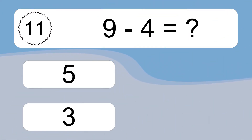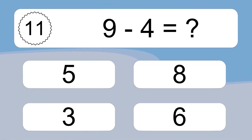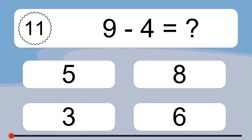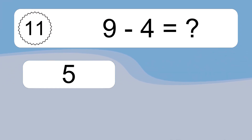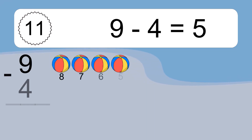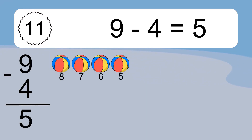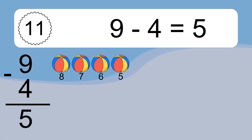9 minus 4 equals what? 9 minus 4 equals 5. Let's count it: 8, 7, 6, 5.